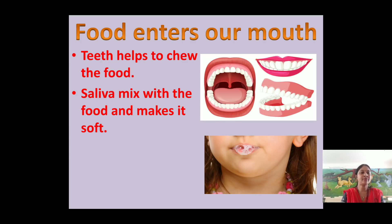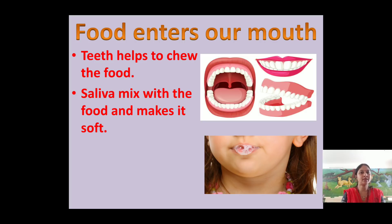When we eat food, we put the food in the mouth and the teeth which are present in our mouth help to chew the food. There are different types of teeth — biting, chewing, crushing, and grinding. There are four types of teeth and they help us to chew, grind, and bite the food.